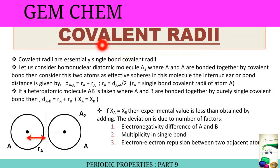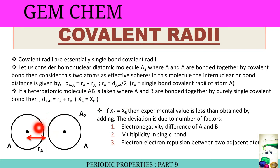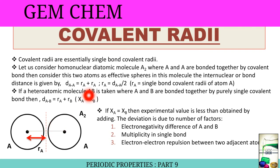Covalent radii are essentially single bond covalent radii. Consider a homonuclear diatomic molecule A₂ where A and A are bonded together by a covalent bond. Treating these two atoms as effective spheres, the internuclear or bond distance is given by D_AA = Ra + Ra, so Ra = D_AA / 2. Ra is the single bond covalent radius of atom A.